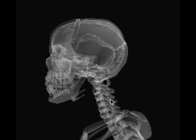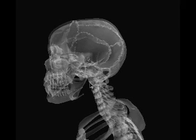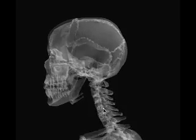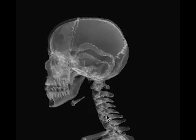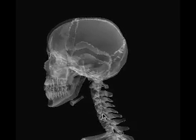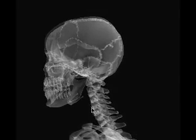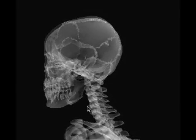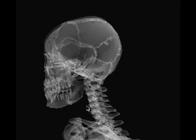Most of the time what we're looking at is the TMJ, ramus, and part of the body. The natural tendency for a person, when you ask them to tilt their head to the side, is for them to also kind of turn their head in the direction of the tilt. And for the axiolateral mandible X-ray, a lot of times this is exactly the opposite of what we're looking for.